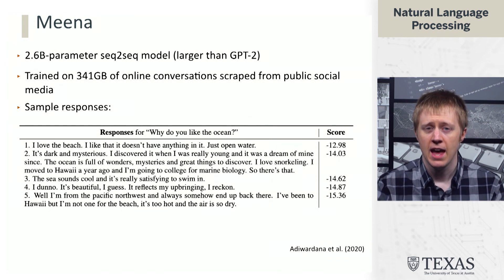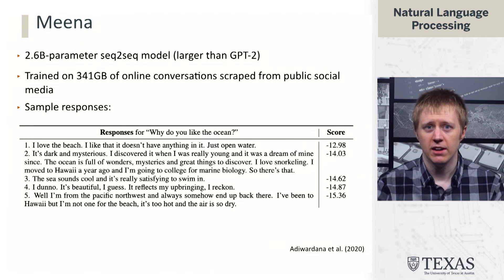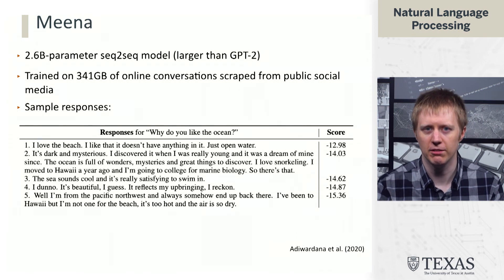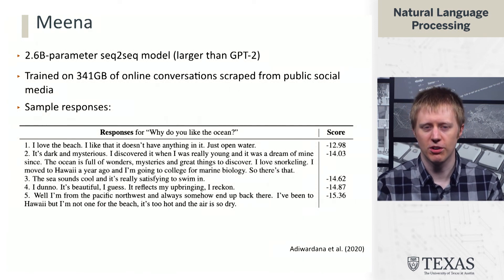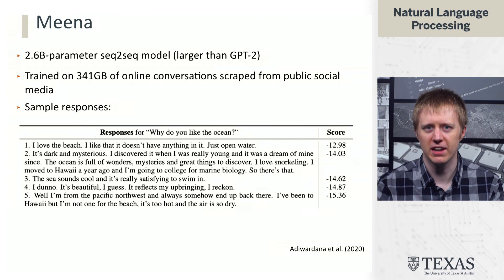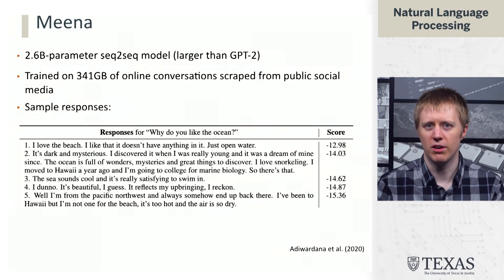The responses Meena gives now look a lot better. If you ask it 'why do you like the ocean,' instead of a barely relevant answer, the system will go on and talk about things like the sea sounds cool, it's really satisfying to swim in, or 'it's beautiful, it reflects my upbringing' — responses that are much more relevant, sensible, and coherent in the context of the question.